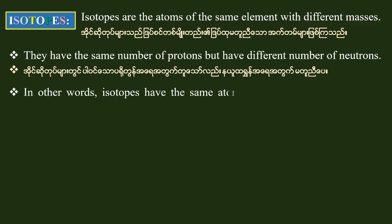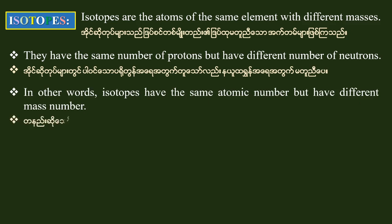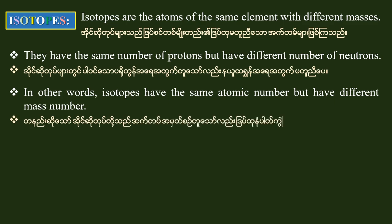In other words, the isotopes have the same atomic number but have different mass numbers. The isotopes have the same atomic number.